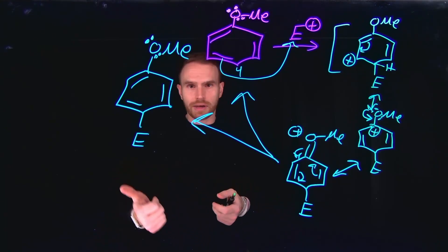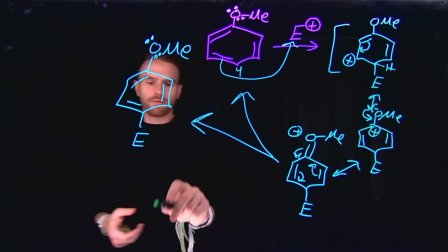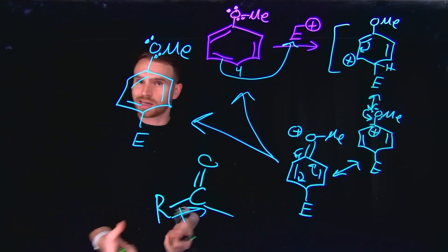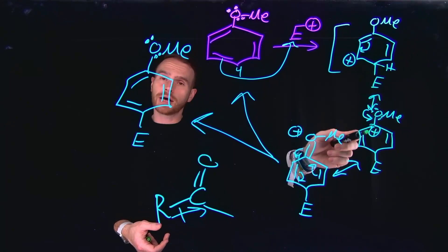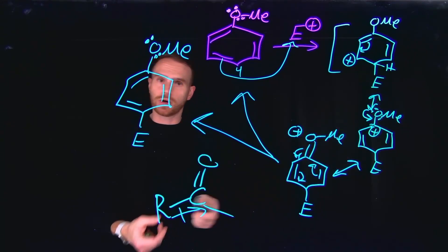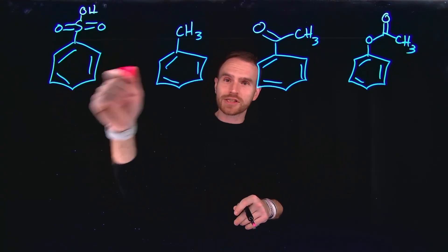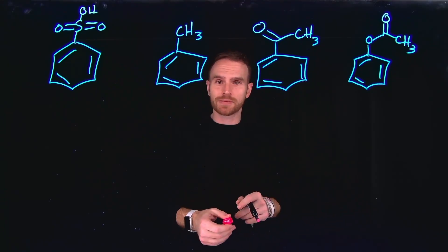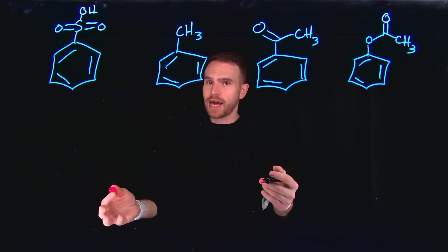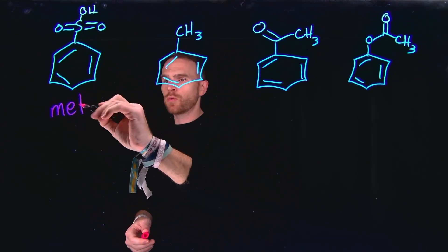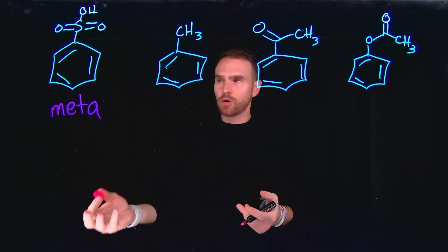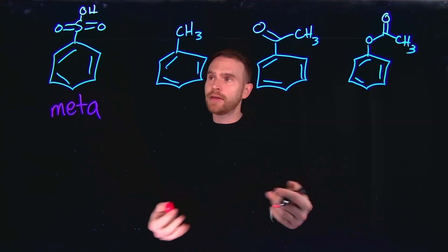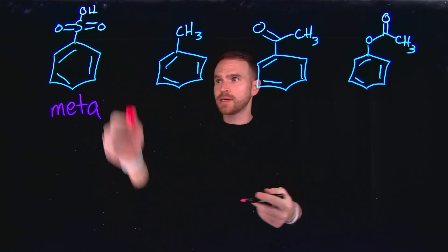Examples of meta directors include carbonyls, which are strongly electron-withdrawing groups. For the practice question evaluating different substituents: SO3H is a meta-director because sulfur has no available lone pairs to donate, and the oxygen atoms are strongly electron-withdrawing, meaning there are no electrons to donate into the pi system of the benzene ring.